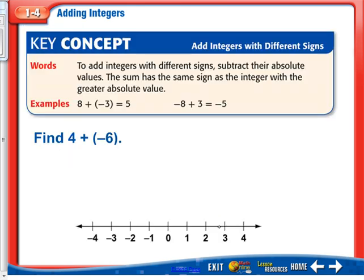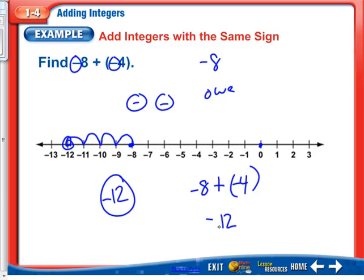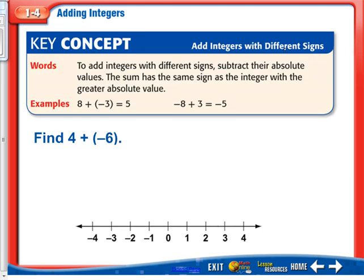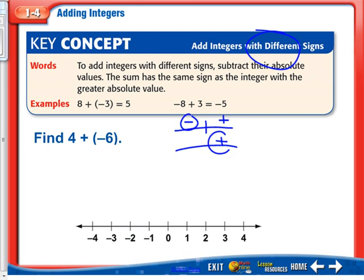I didn't show an example of adding two positives because we've done that throughout grade school. Now we're going to add with different signs. On the tug-of-war, we've got to figure out who wins. The absolute value that is greater will win. So eight has a greater absolute value than three, therefore the positive will win and we're going to have a positive number left over. Here, negative eight has a greater absolute value, so it will win over positive three. If I owe $8 and I have $3, I'm still going to owe money when I'm done.